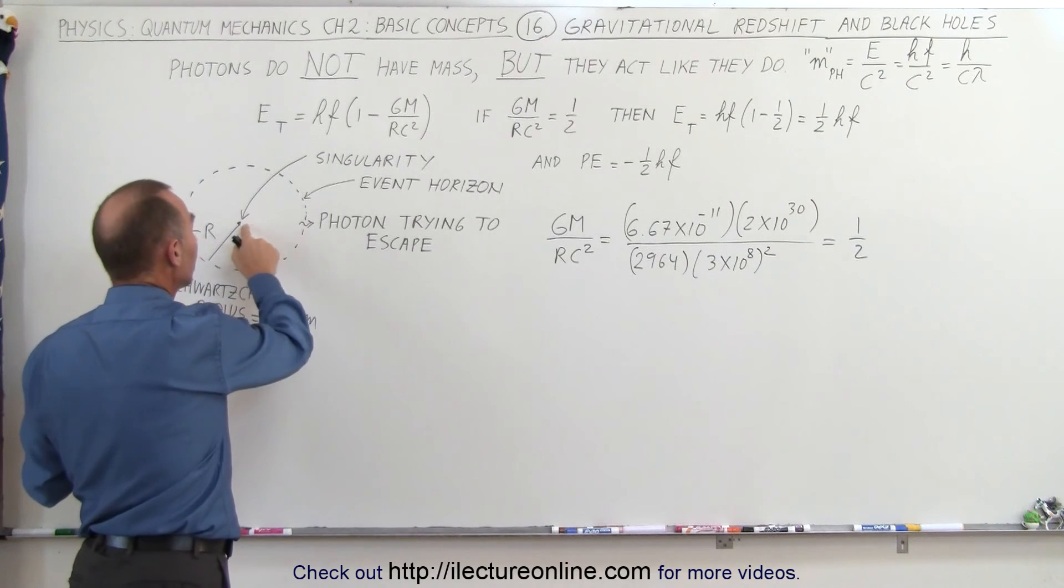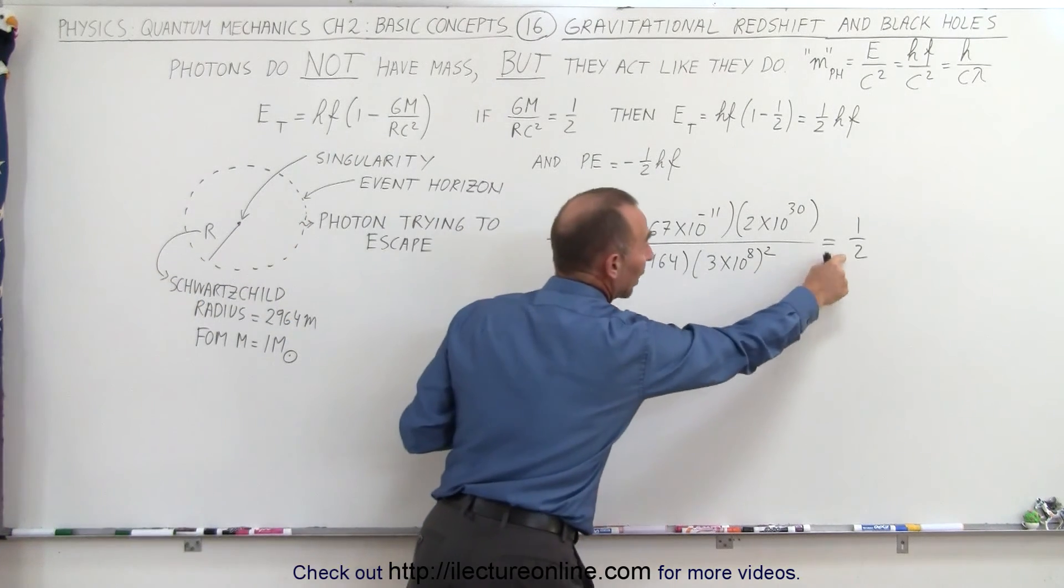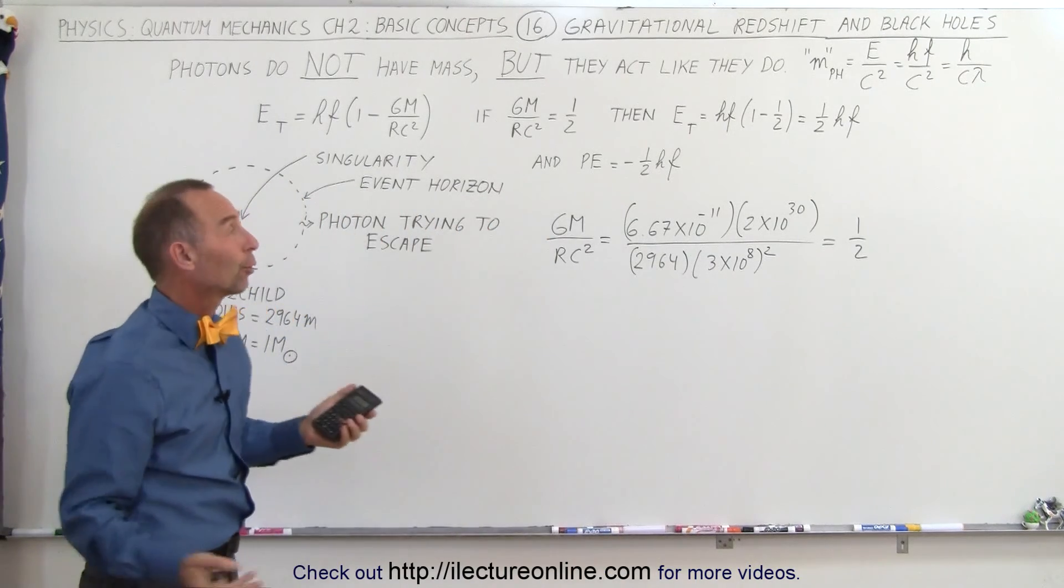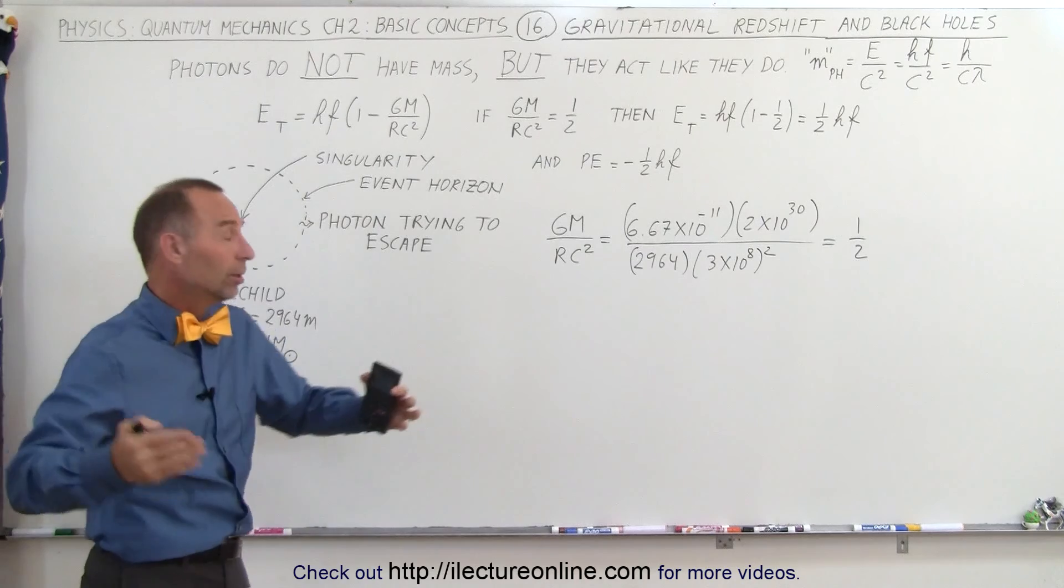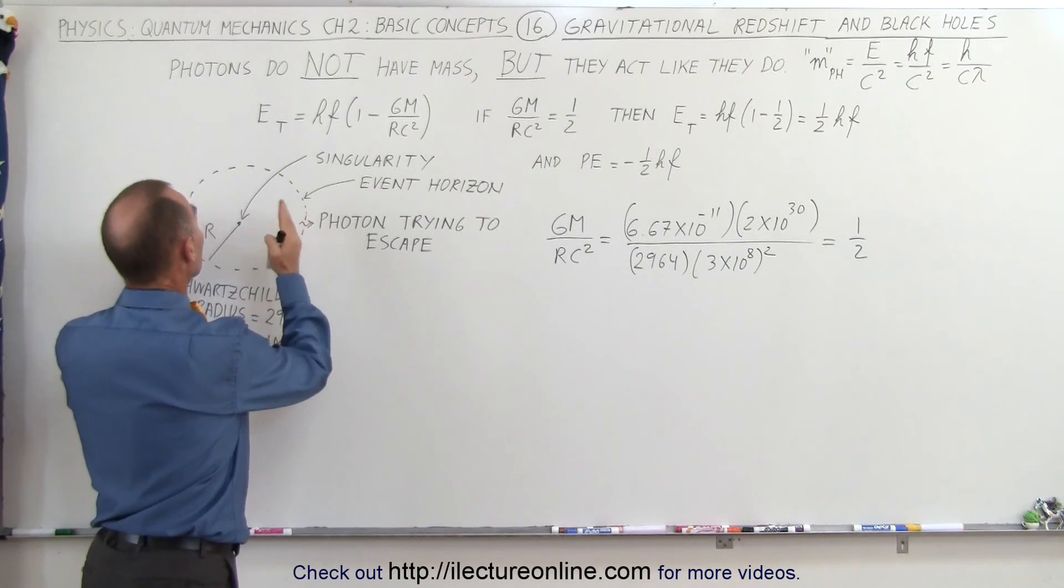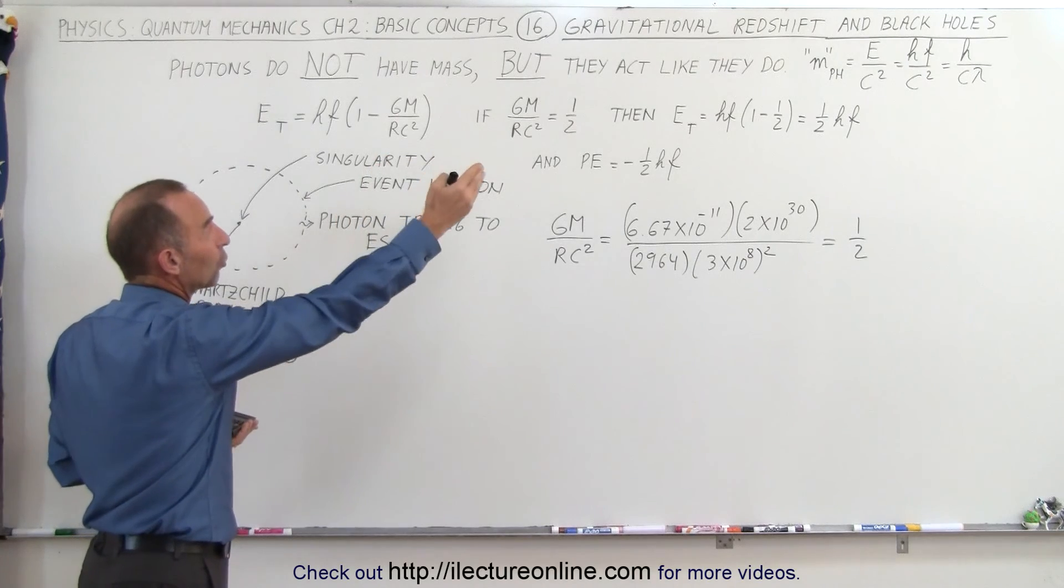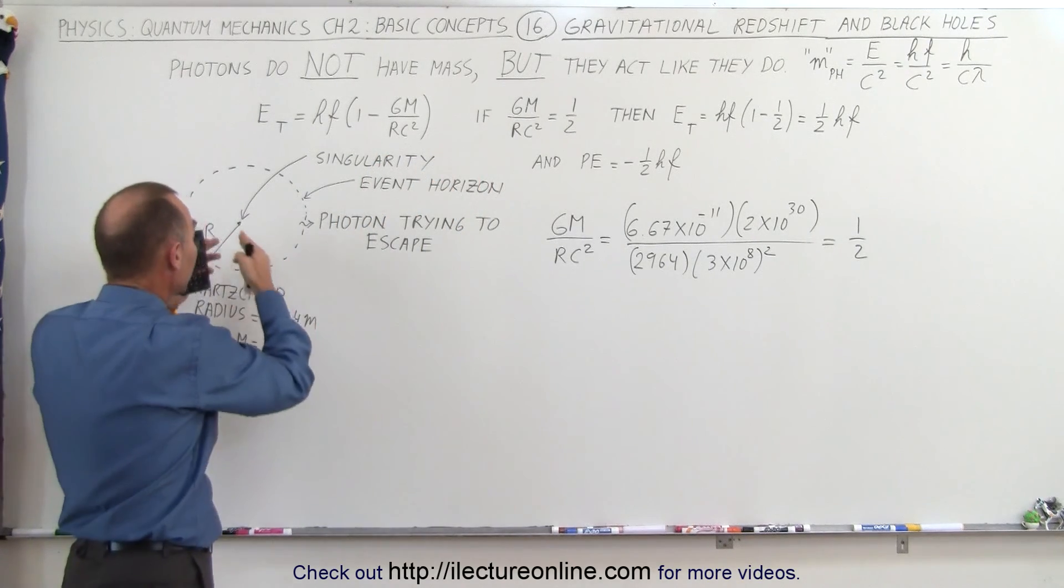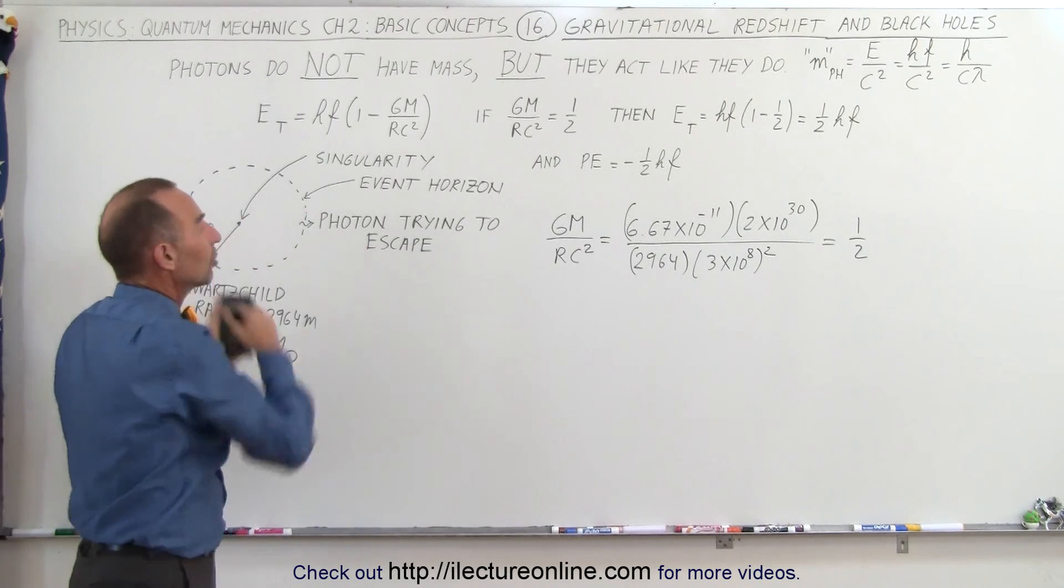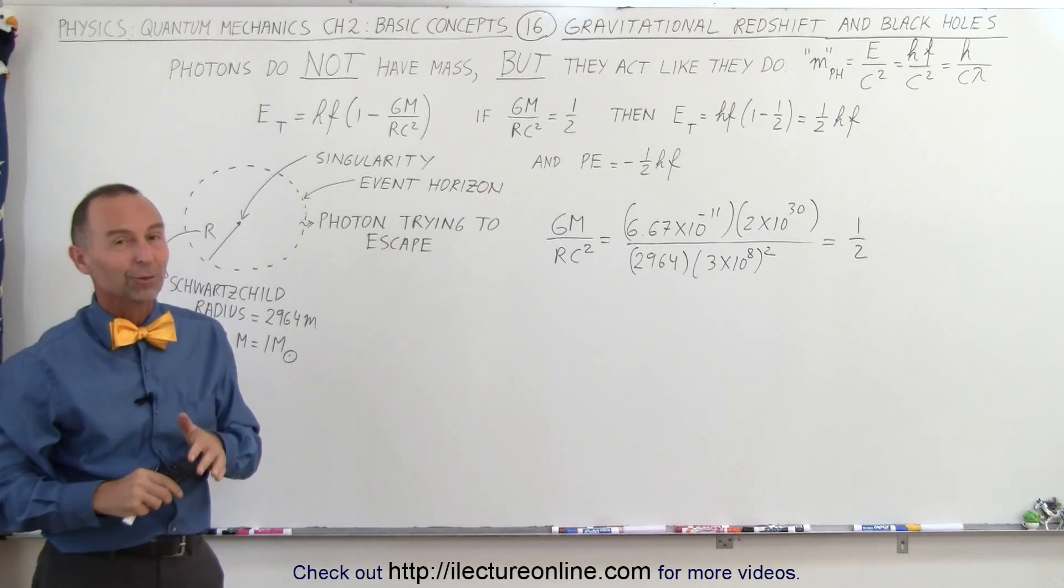Anything closer to the singularity than the event horizon, this number would become greater than one half, and therefore the photon could no longer get away, and that's why we call it a black hole, because no radiation can escape from within the event horizon, because the gravitational redshift would be greater, the amount of energy required to overcome the potential energy would be greater than the energy contained within the photon. And that's why we call them black holes.